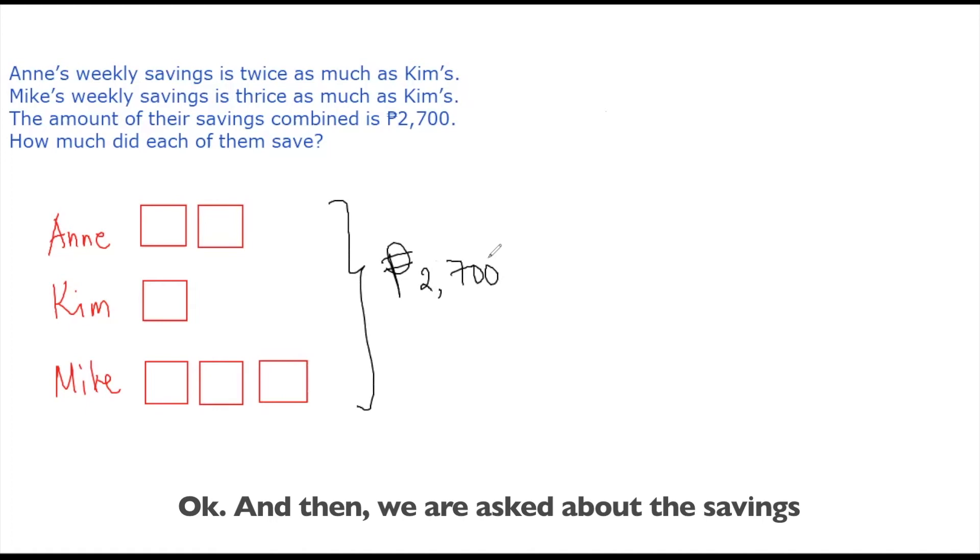And then we are asked about the savings of each of the three persons. So looking at the illustration, we'll see that 2,700 pesos is the amount of all the six blocks combined. So the six blocks is equal to 2,700 pesos. So to get the value of each block, we can use division to get the amount represented by each of these blocks.